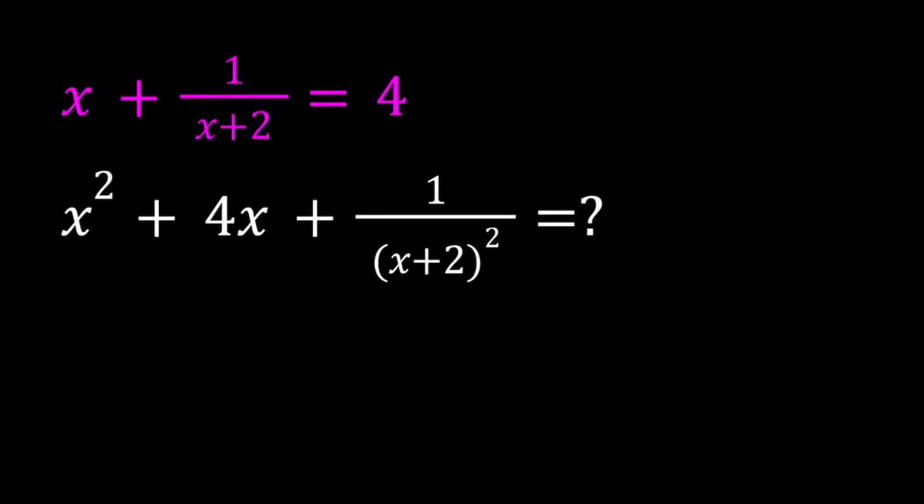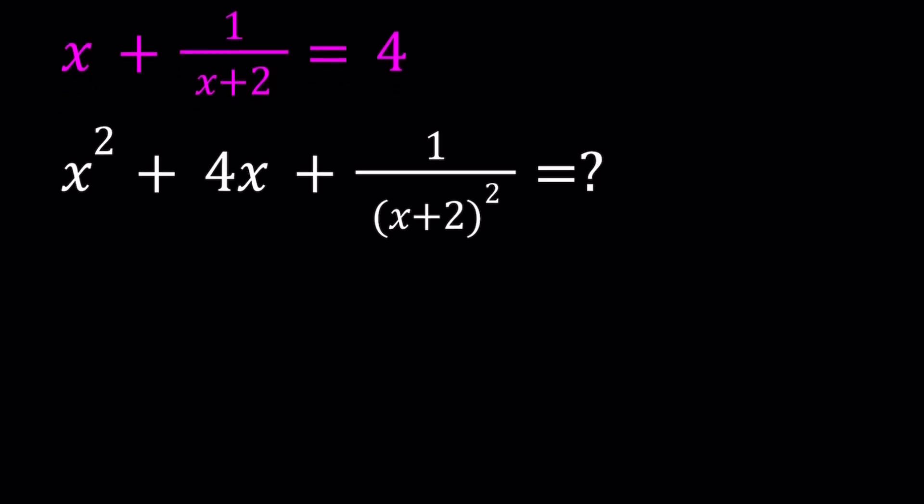Hello everyone. In this video, we're going to be evaluating a rational expression. We're given that x plus 1 over x plus 2 is equal to 4, and we're supposed to evaluate x squared plus 4x plus 1 over x plus 2 quantity squared. I'll be presenting two methods, even though you can do this problem in three different ways. I'll just talk about maybe the third method briefly, but I'm not going to use it.